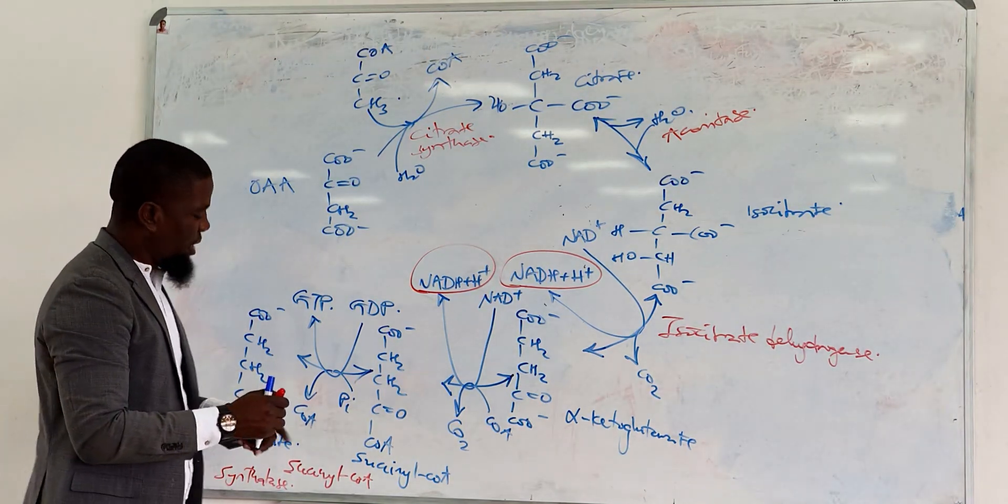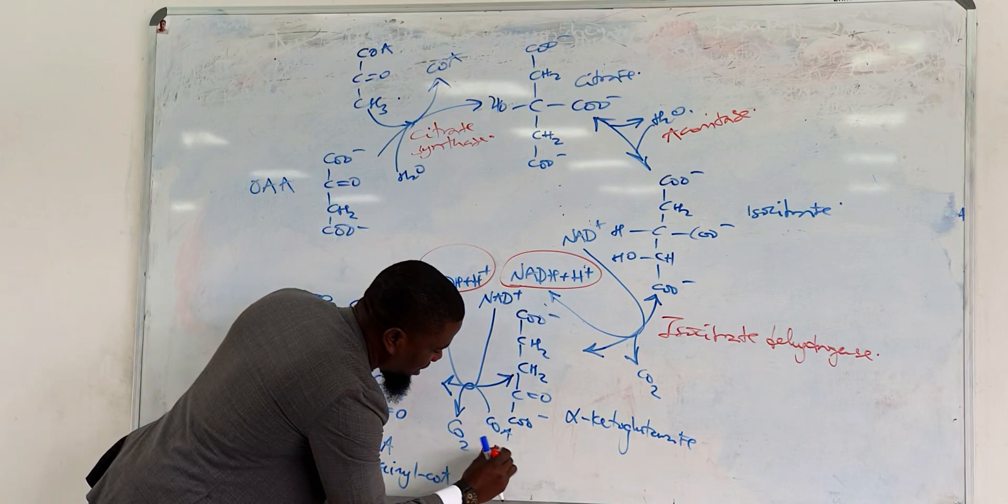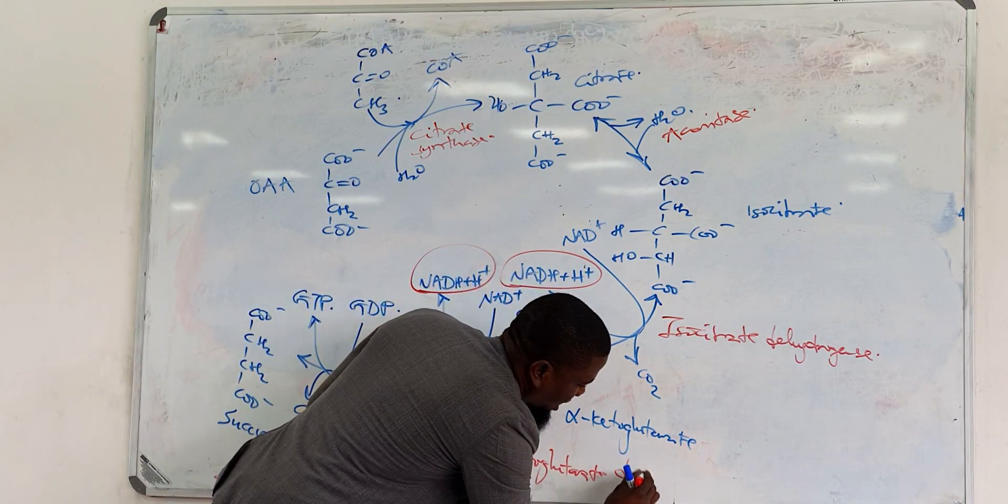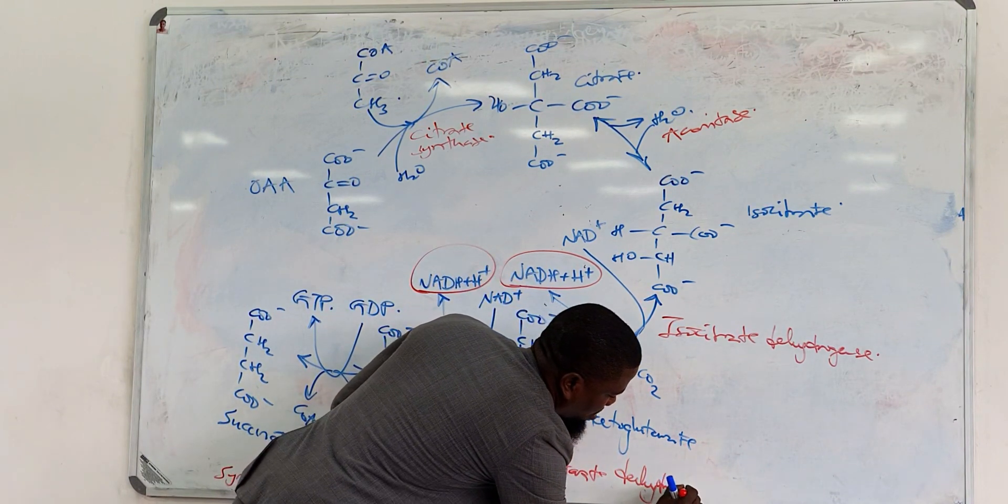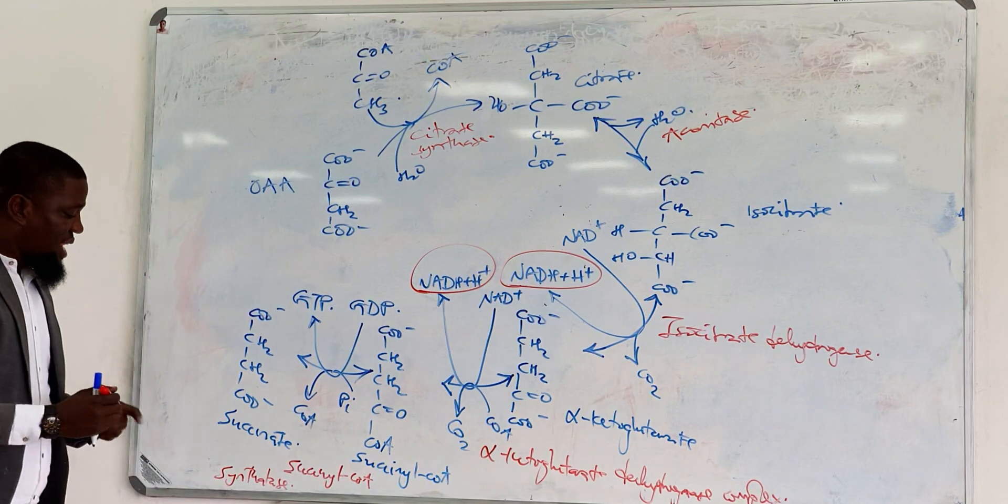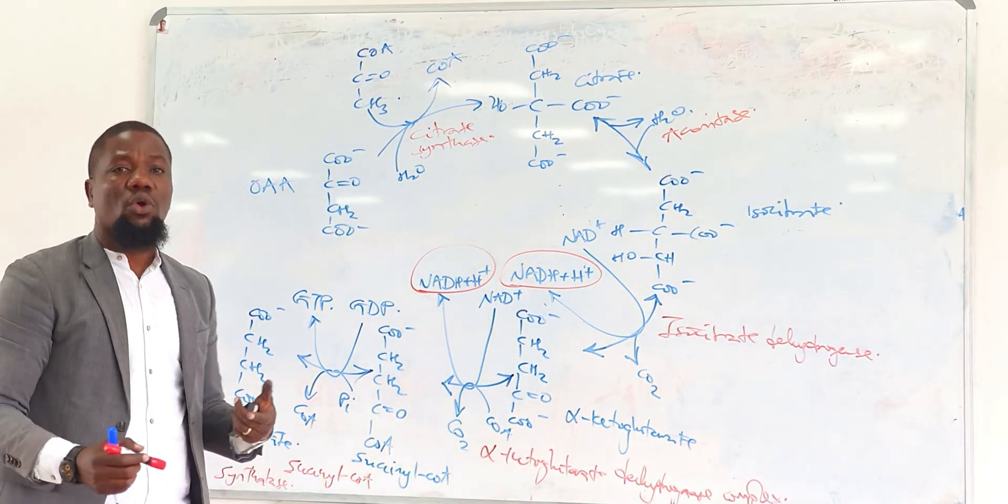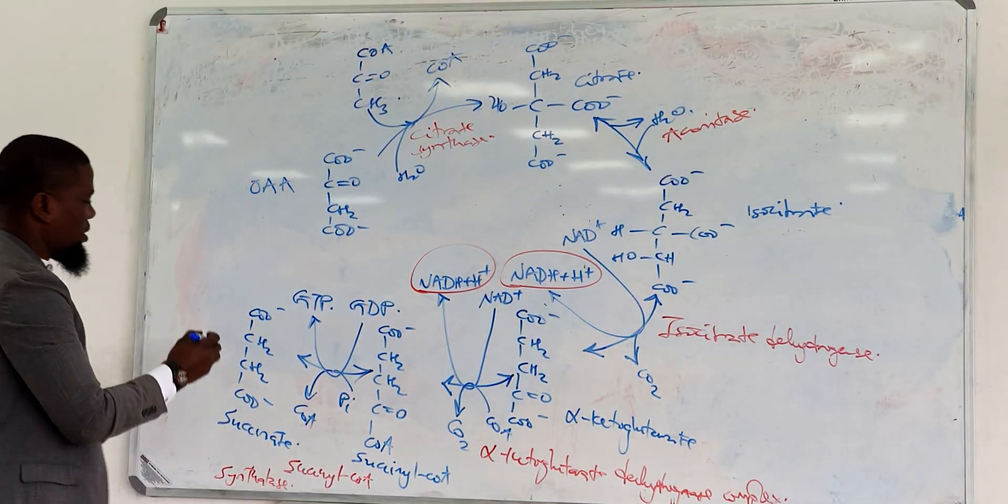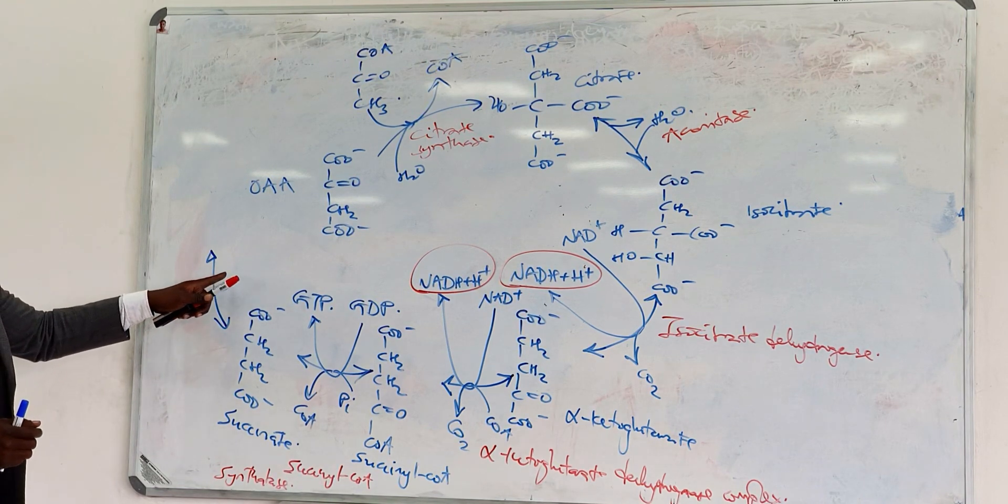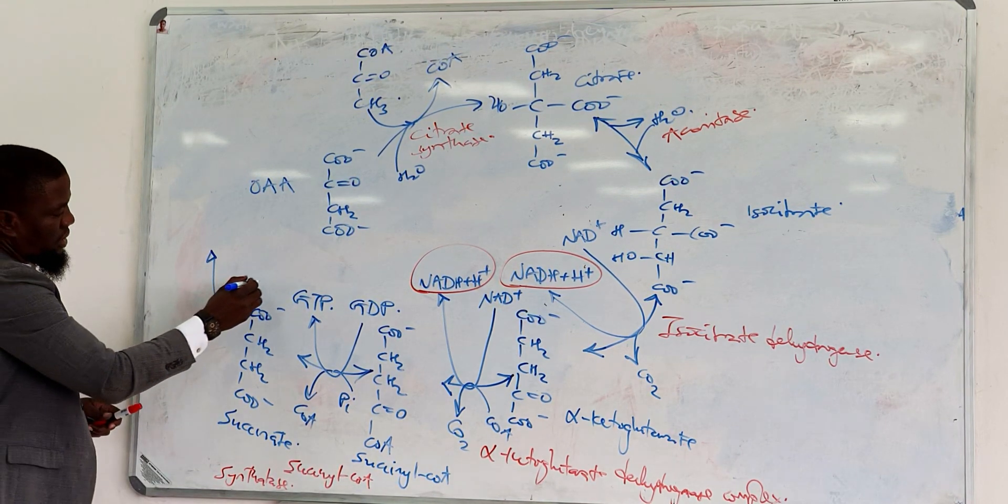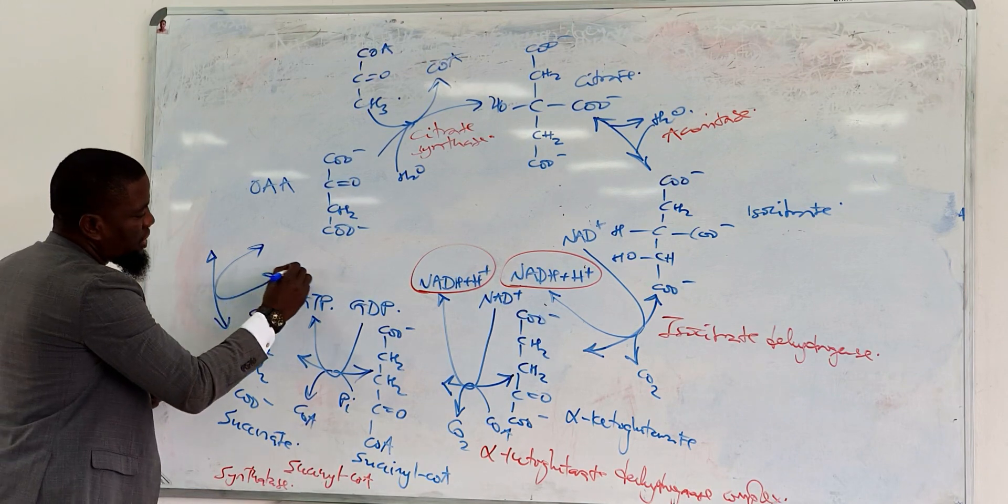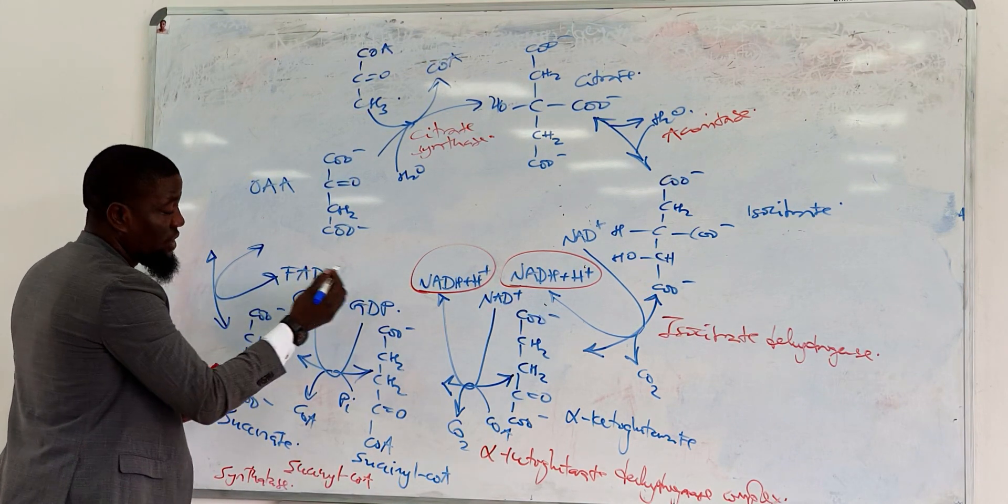So, that will be your end product. Here we said alpha-ketoglutarate dehydrogenase, the main complex. Then the next reaction is the reaction you saw in complex 2. This reaction involves oxidation. Of course it is. Oxidation of succinate into fumarate. This reaction uses FAD as its coenzyme.